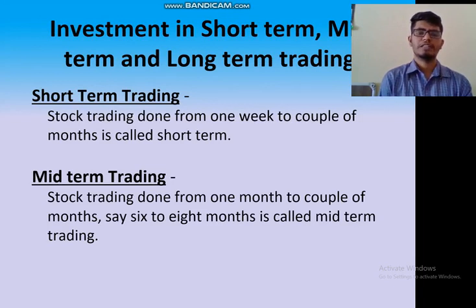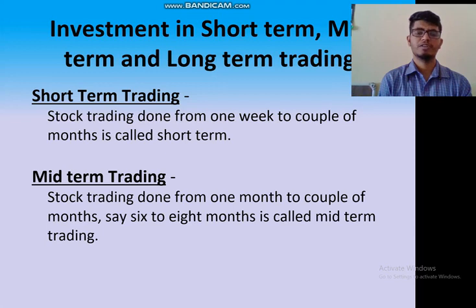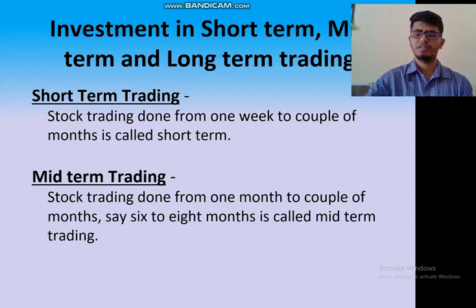Short term trading is stock trading done from one week to a couple of months. The time duration is one week to a couple of months. Mid term trading is stock trading done from one month to six to eight months. The time duration is six to eight months for mid term trading.